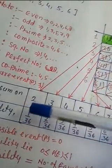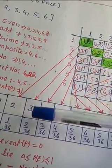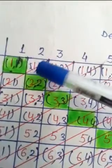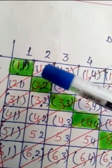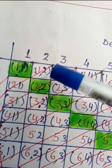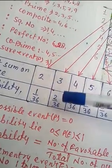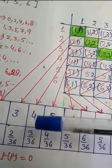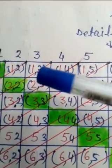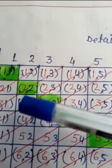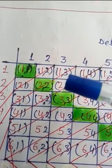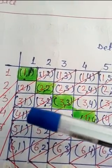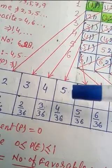If the sum is 3, there are two outcomes: 1 plus 2 equals 3, and 2 plus 1 equals 3. So probability is 2 upon 36. For sum of 4, there are three possible outcomes: 1 plus 3, 2 plus 2, and 3 plus 1, giving probability 3 upon 36. When sum of both faces is 5, there are four possible outcomes.